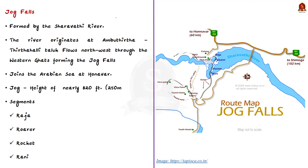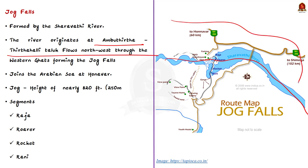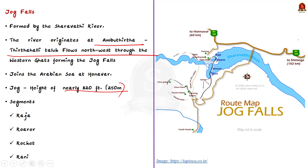The Sharavathi River joins the Arabian Sea at Honnavar. It flows from a height of nearly 820 feet as Jog Falls into deep gorges in four distinct segments: the Raja, the Roarer, the Rocket, and the Rani. Each segment's name reflects its character. From north to south: Raja, Roarer, Rocket, and Rani.